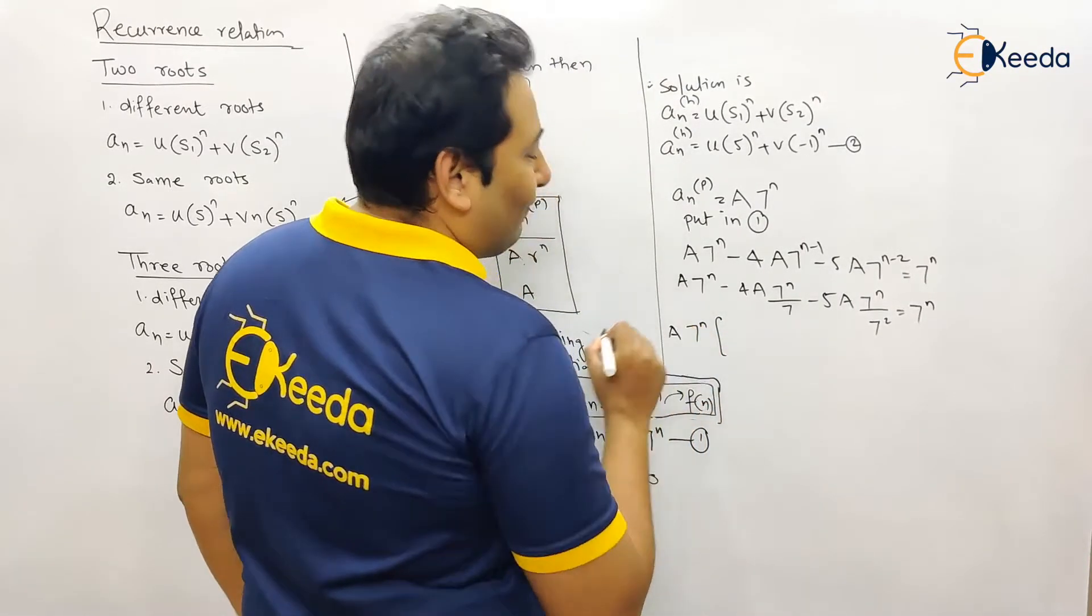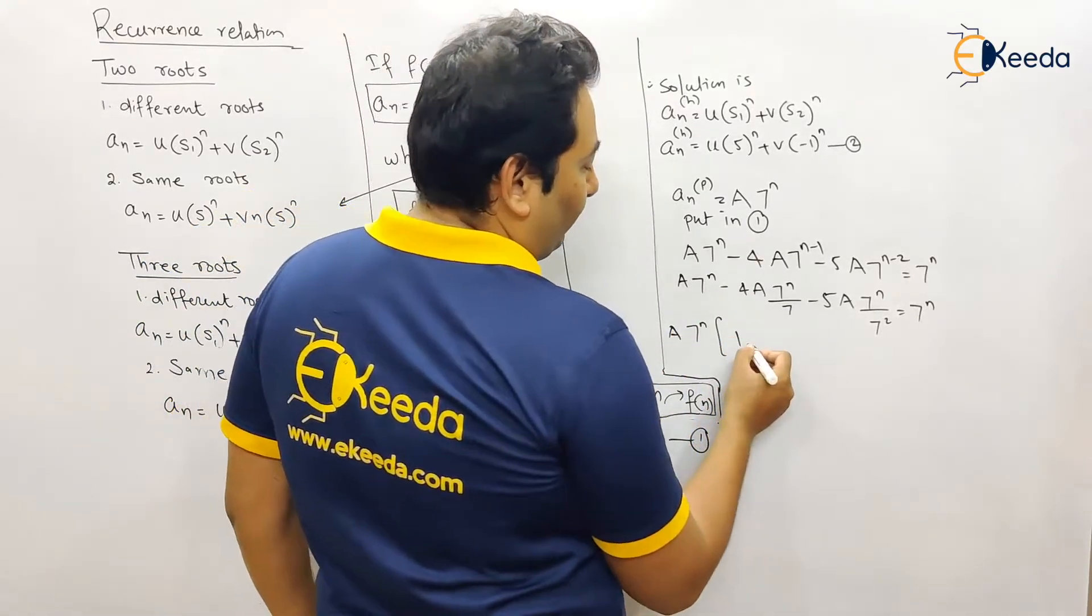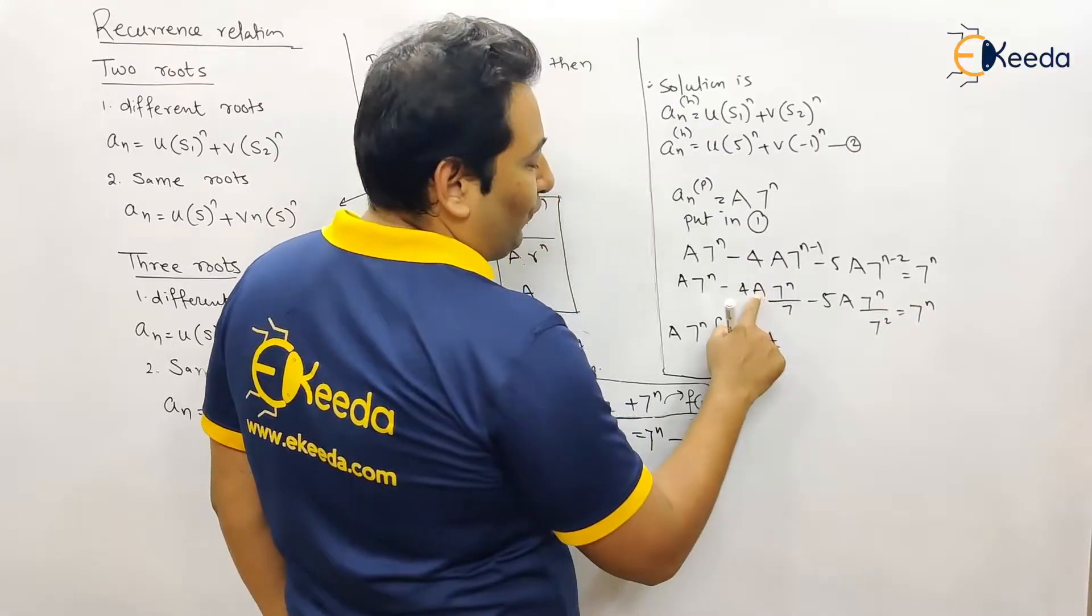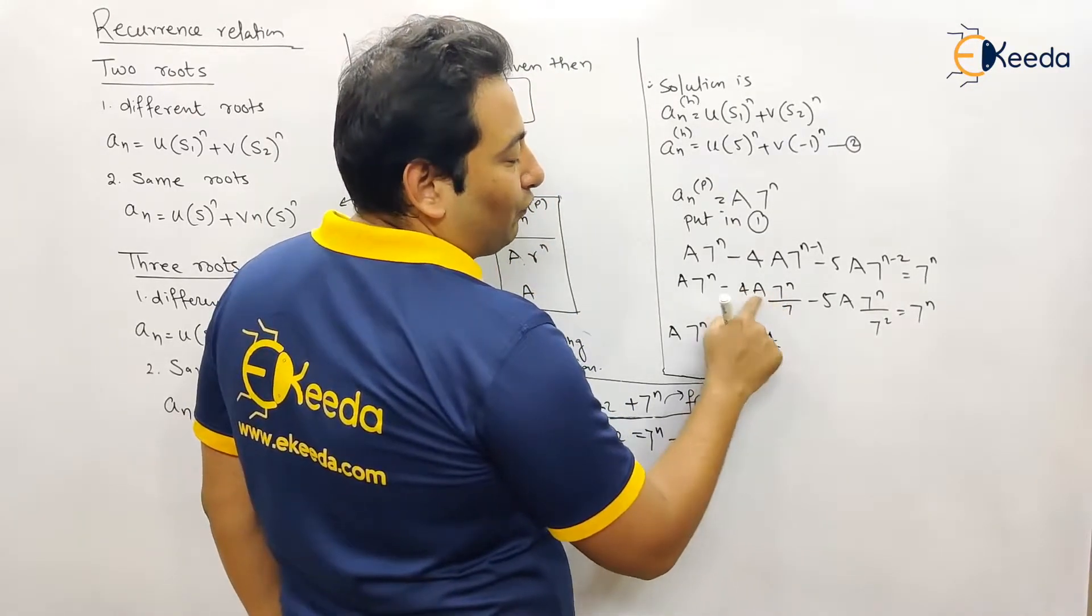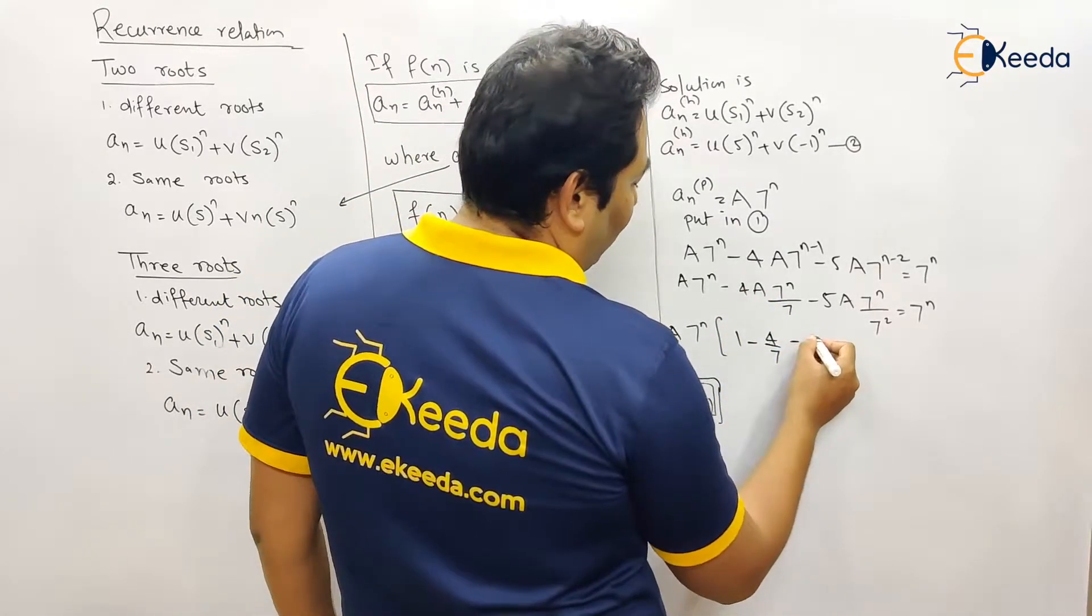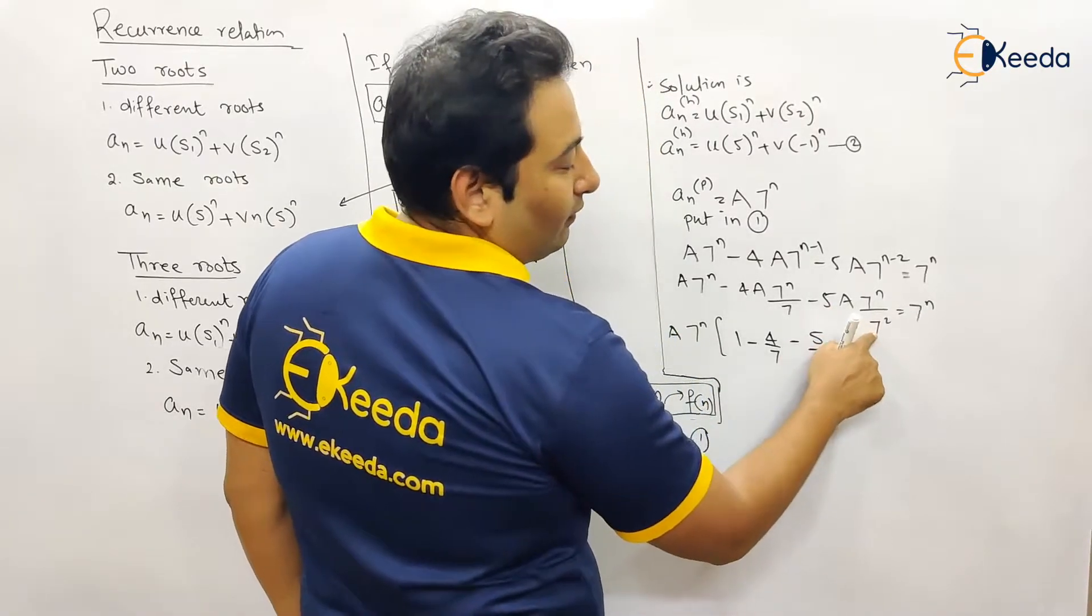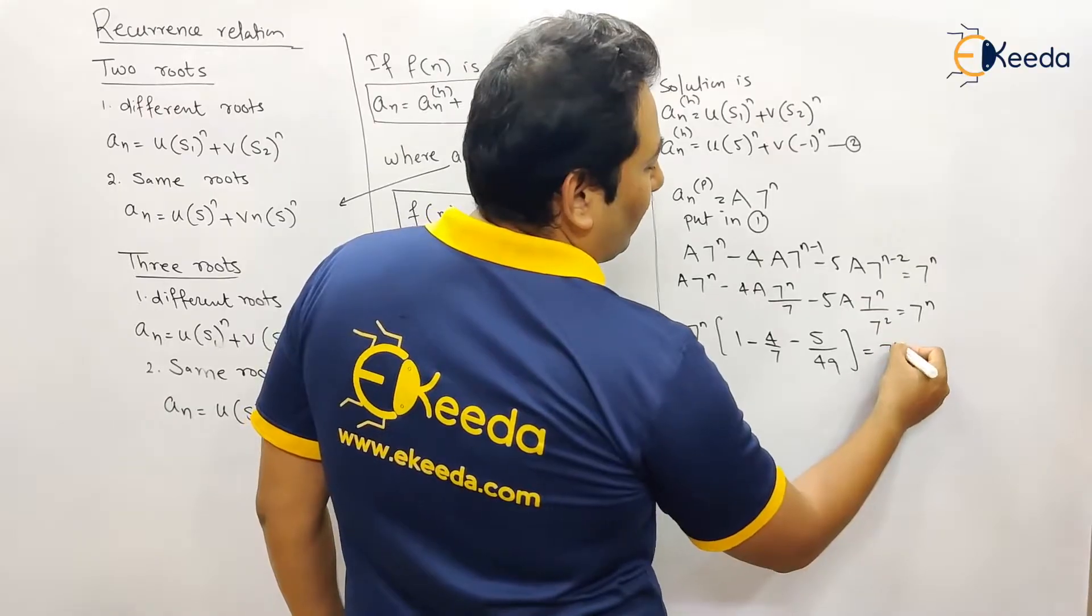Let's take seven raised to n common inside, or we can take a·seven raised to n common. So here it is one minus four by seven, because we took a·seven raised to n common. So we left with four by seven minus five upon forty-nine is equal to seven raised to n.